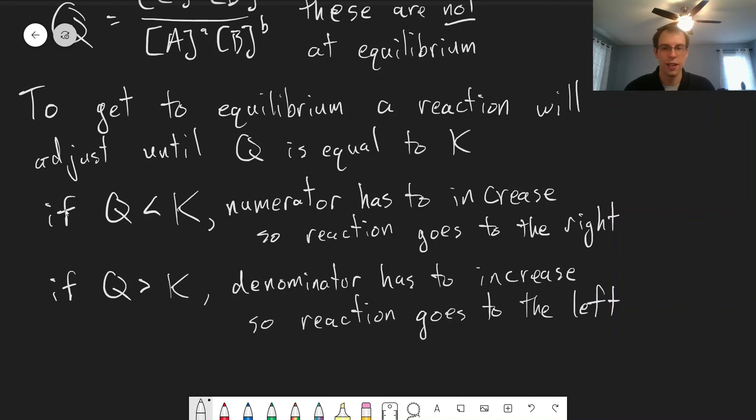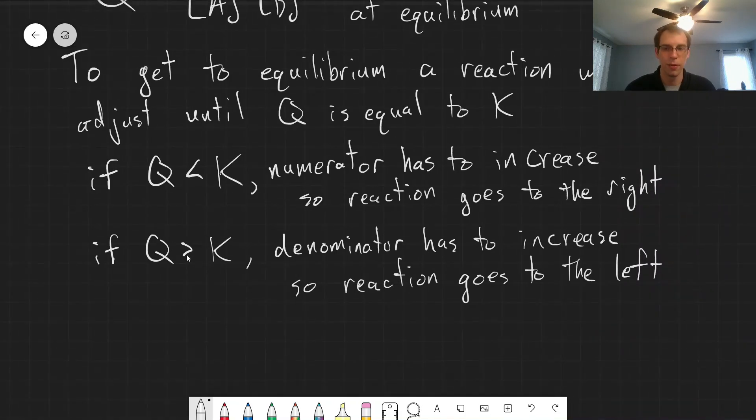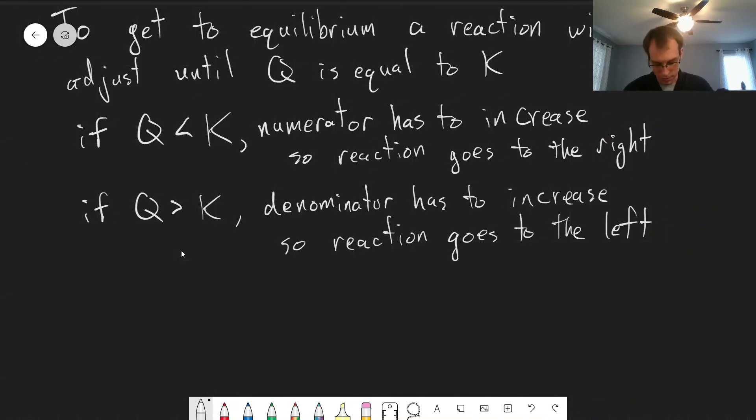And so this applies in chemistry to the well-known principle, Le Chatelier's principle, which is basically saying what's above here, that Q will adjust until it equals K.